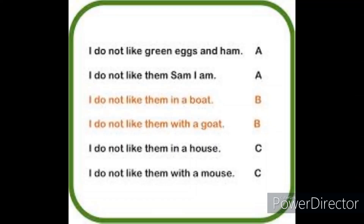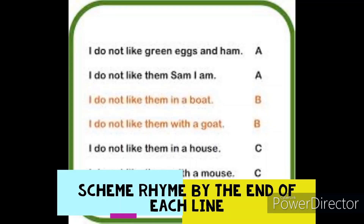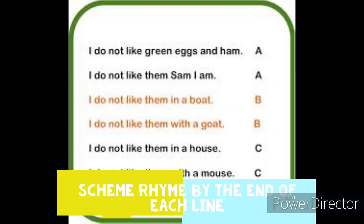With each meter — whether monometer, dimeter, trimeter, tetrameter, pentameter, hexameter, heptameter, or octameter — we have the stress or rhythm, and we call it either iambic, trochaic, dactylic, or anapestic. At the end of each final line, we have a sound, and this sound is symbolized through the letters of the alphabet.